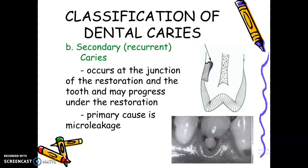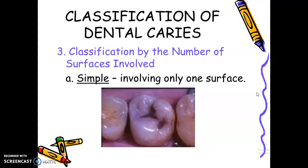As a review, we have GV Black's classification: Class 1, 2, 3, 4, 5. Any description that is not described in Class 1, 2, 3, 4, 5, or 6 will be classified as Class 1. The second classification is the location of caries — whether it's primary caries, the original caries, or secondary or recurrent caries. Then we will go to the classification by the number of surfaces involved. Let us continue to the next video.